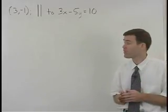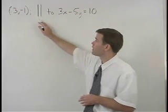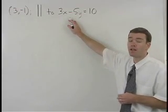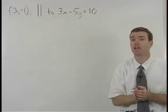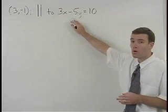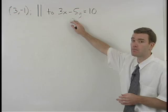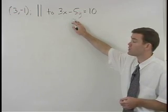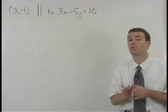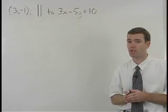Remember, however, that if our line is parallel to this other line, it will have the same slope as this line. So our first task is to figure out what the slope of this line is. And we do that by converting its equation to slope intercept or y equals mx plus b form.